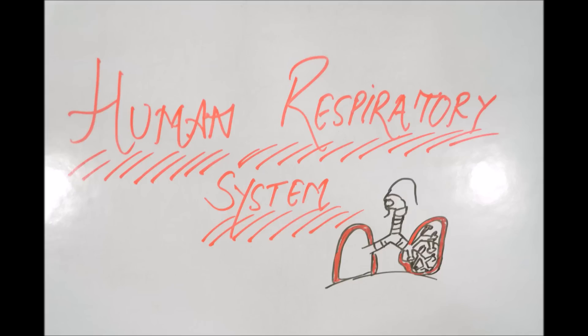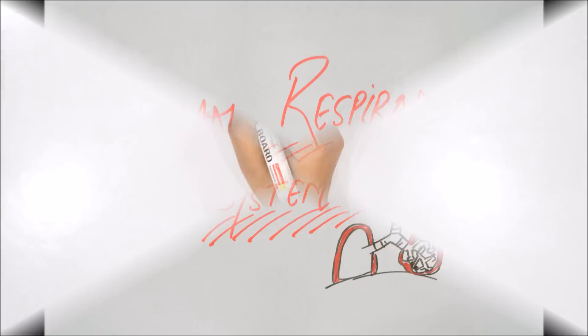Oxygen is passed from the lungs to the blood and CO2 is passed via reverse route. So in humans, respiration occurs by lung. This is called pulmonary respiration. So let's see how it works. Let's draw it.